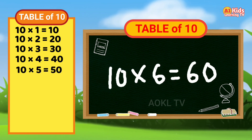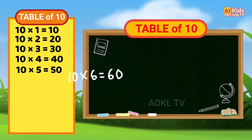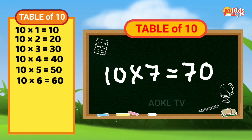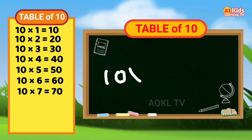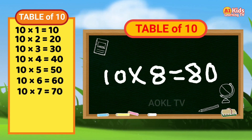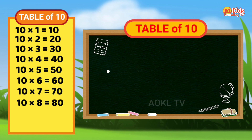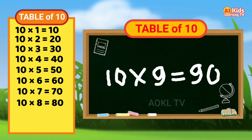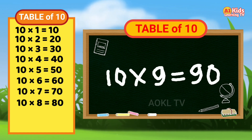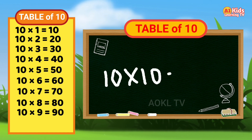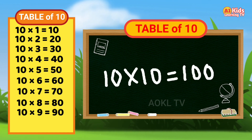Ten six's are sixty. Ten seven's are seventy. Ten eight's are eighty. Ten nine's are ninety. Ten ten's are one hundred.